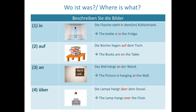Then: 'Das Bild hängt an der Wand' — the picture is hanging at the wall. We use 'an der Wand' because nobody can hang a picture inside or behind the wall; it's always at the wall. Next: 'Die Lampe hängt über dem Sessel' — the lamp hangs over the chair.